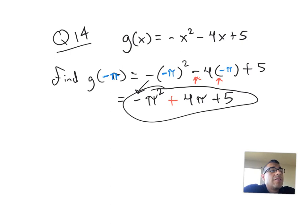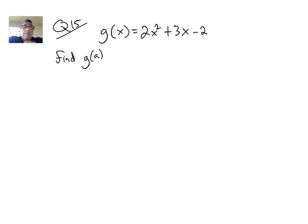So again, when we're evaluating these functions for a certain number, all you're doing is plugging in the value that's here in the parentheses. Let's take a look at another one — that was question 14. So for this next problem, we're given the function 2x squared plus 3x minus 2, and they want us to find g of a.